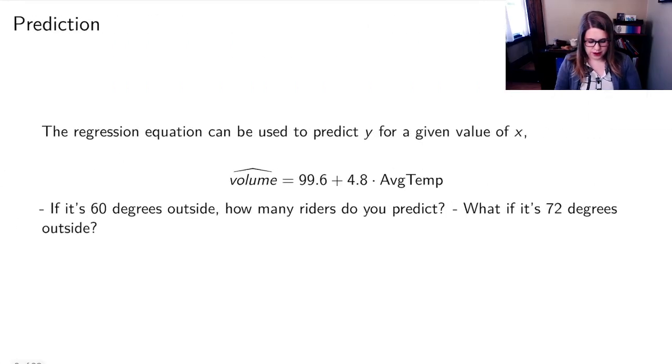So let's look at the regression equation for my problem. So I found that volume hat, the predicted number of people on the rail trail, is equal to 99.6 plus 4.8 times my explanatory variable, which was average temperature. And then I have a couple questions here.